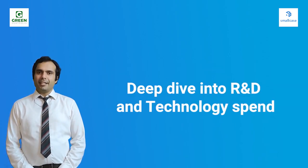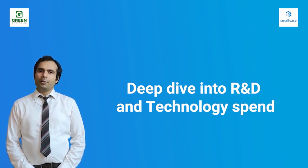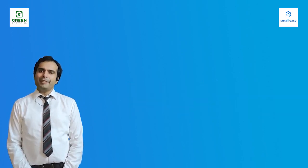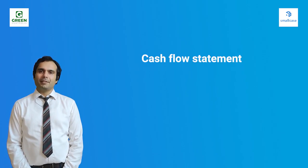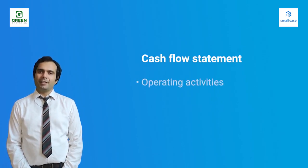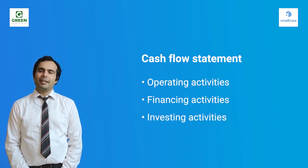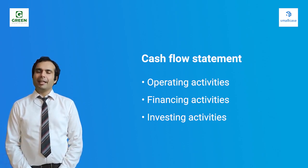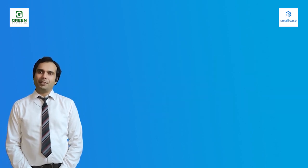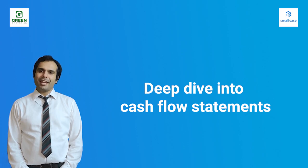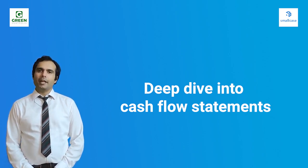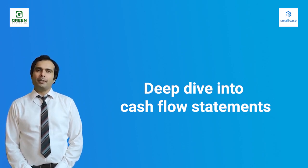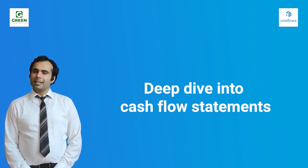You can look at the section in the annual report on technological absorption, adaptation, and innovation for further details. The next important point is cash flow statements, which cover operating activities, financing activities, and investing activities for the last financial year. Cash flows from operations are usually higher than net profit because of non-cash items like depreciation. How the company uses its cash is of paramount importance, and cash flows often reveal a lot about corporate governance.